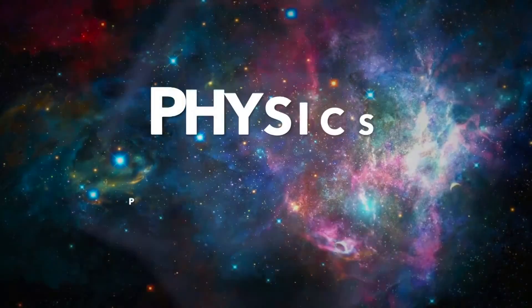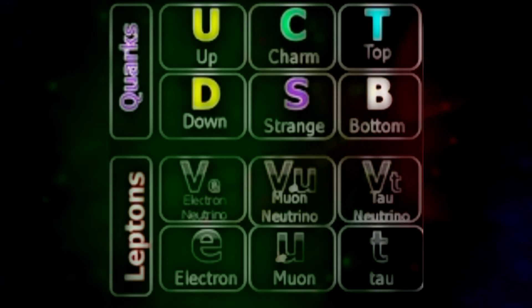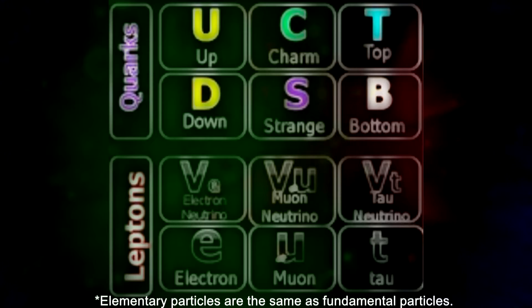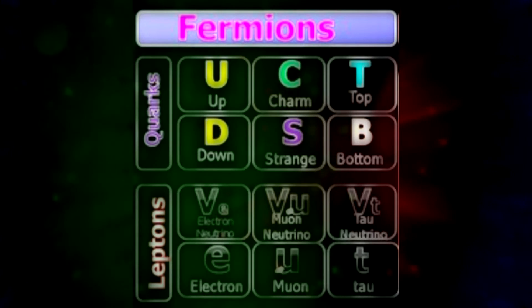Before we dive into the various flavors, it is vital to know what a lepton is exactly. The essential building blocks of matter, quarks and leptons, are recognized as elementary particles. Leptons respond to only electromagnetic, weak, and gravitational forces and have a half spin, which classifies them as fermions — subatomic particles that have half-integer spin.